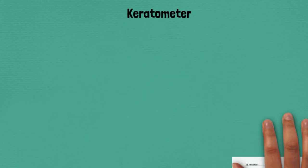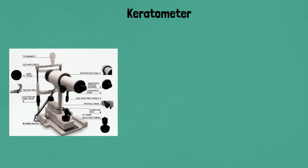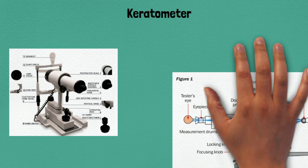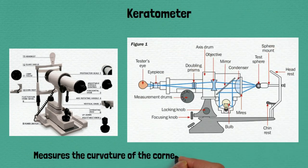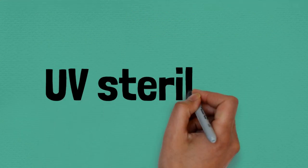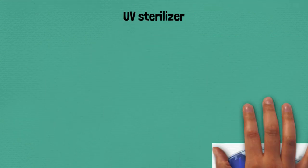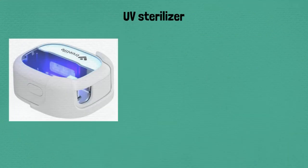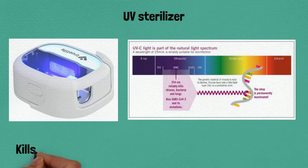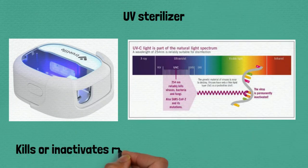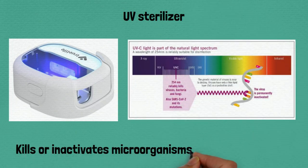Sixty-two: keratometer, measures the curvature of the cornea for fitting contact lenses. Sixty-three: UV sterilizer, kills or inactivates microorganisms using ultraviolet light.